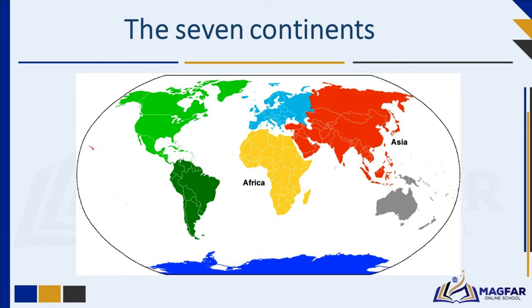Africa is the second largest continent, known for its rich wildlife. It is the place of vast deserts like the Sahara and the Kalahari. Incredible landscapes such as Table Mountain in South Africa and the Serengeti are in Africa. North America is where you find the United States, Canada, and Mexico — it's got everything from the Rocky Mountains to the Grand Canyon.